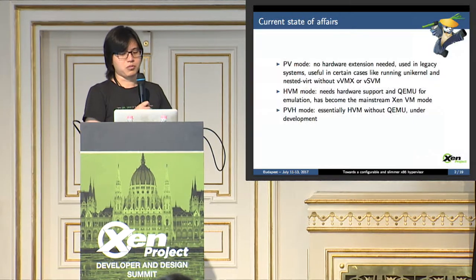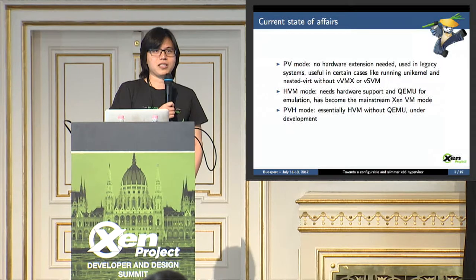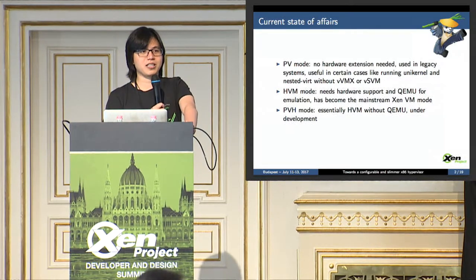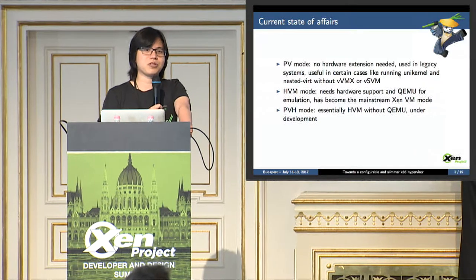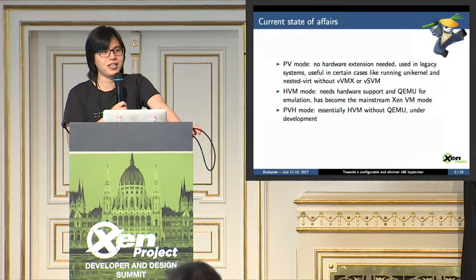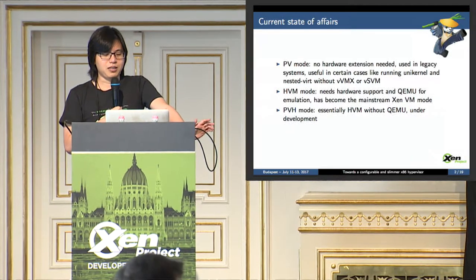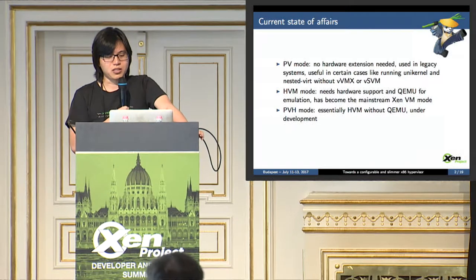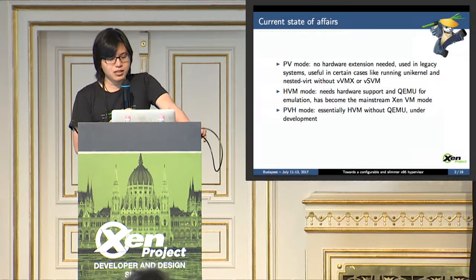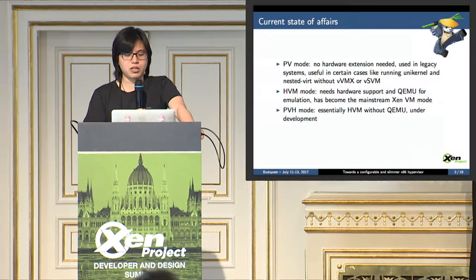However, PV mode is aging at the moment. It has become a source of security bugs recently, and it has certainly caused friction among communities — different communities like the Xen community and the Linux kernel community. However, this mode in itself is still rather useful because it's rather efficient to run unikernel and nesting virtualization without vvmx or vsvm support.